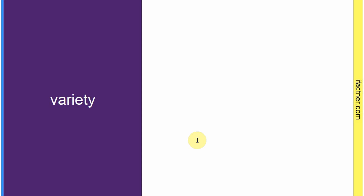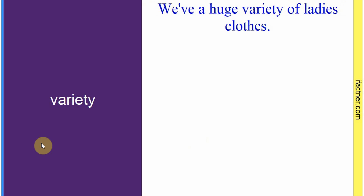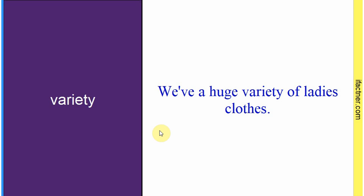Word hai: 'variety'. Sentence: 'We have a huge variety of ladies clothes.' Humari kapdhon ki dukaan hai aur mein keh raha hoon ki hamare paas khawatin ke kapdhon ki bahot bari variety hai — bahot zyada different qismein hain. Toh 'variety' hoti hai 'qism'. Sentence banaaya: 'We have a huge variety of ladies clothes.'